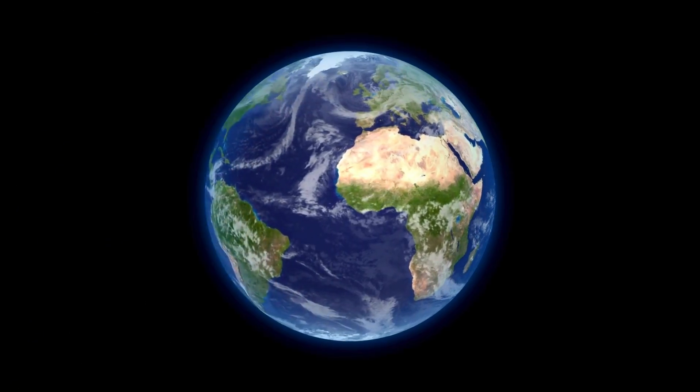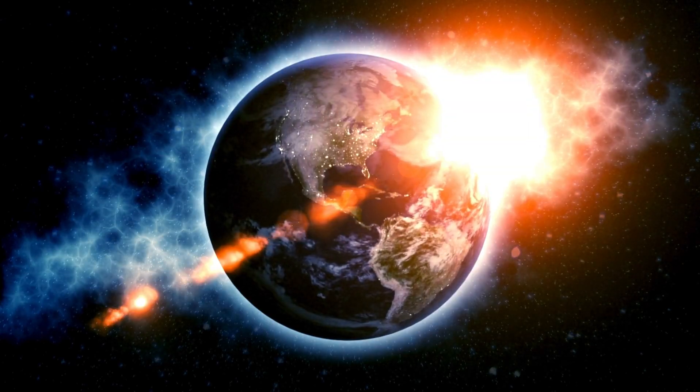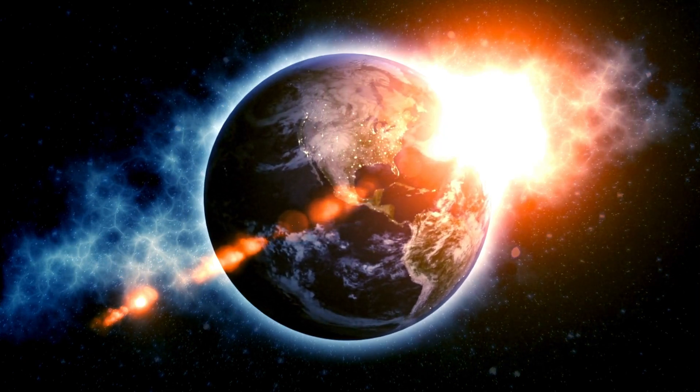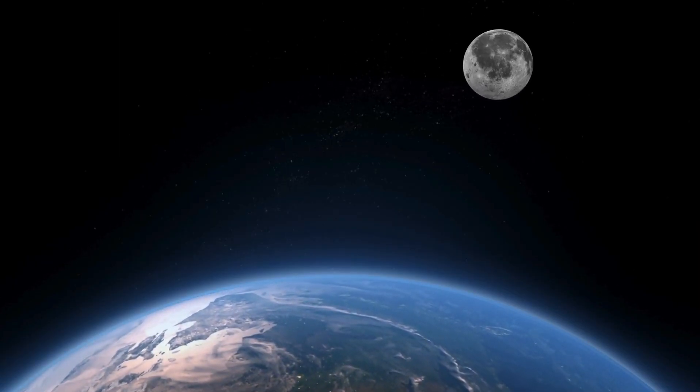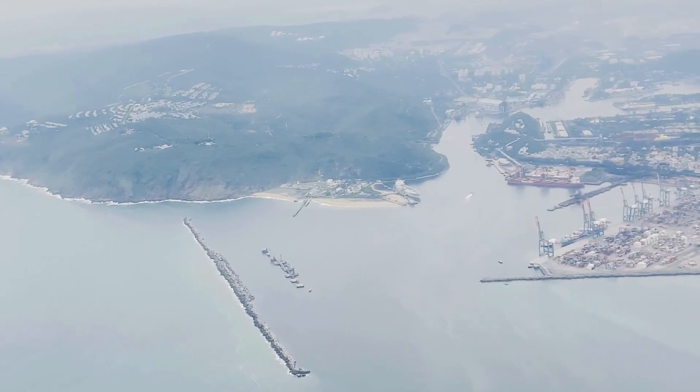Greenland's thick ice sheet acts as an insulator. The ground beneath remains shielded from the frigid temperatures and winds above. Meanwhile, the Earth's internal heat warms the ground from below. In some areas, the ice sheet is firmly attached to frozen ground, providing stability.